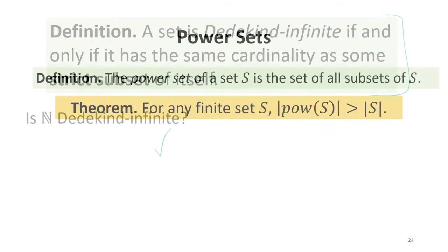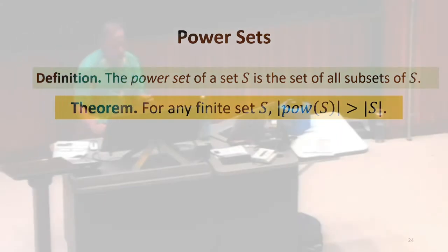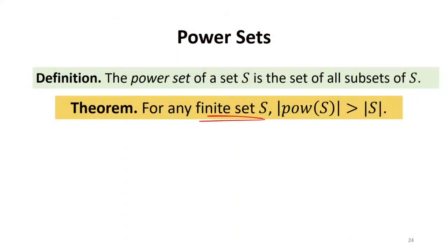A power set is the set of all subsets of a set. The first theorem we want to prove is for any finite set, the cardinality of the power set is greater than the cardinality of the set. Do we think we can prove this? Yes. Good. Confidence. There's lots of ways that we could prove this. What's a really easy way to see this?